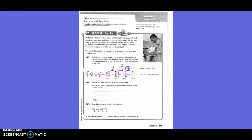Our pattern is adding one and two-sixths. So ten and one-sixth plus one and two-sixths equals eleven and three-sixths, which is also eleven and a half, right? Then eleven and three-sixths plus one and two-sixths equals twelve and five-sixths. The terms are increasing by one and two-sixths each time.